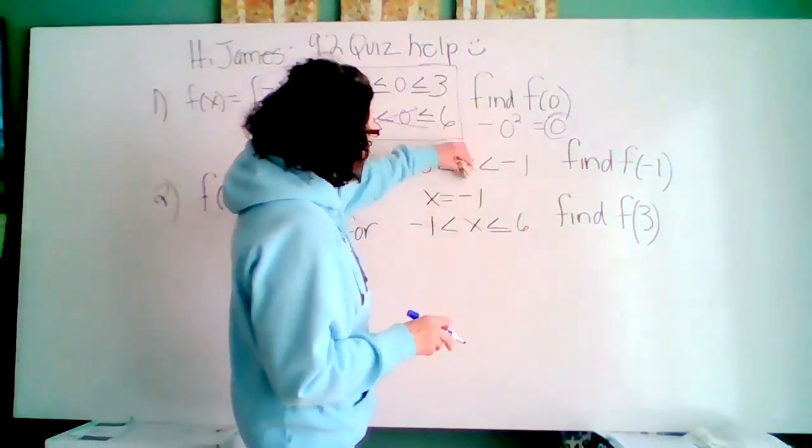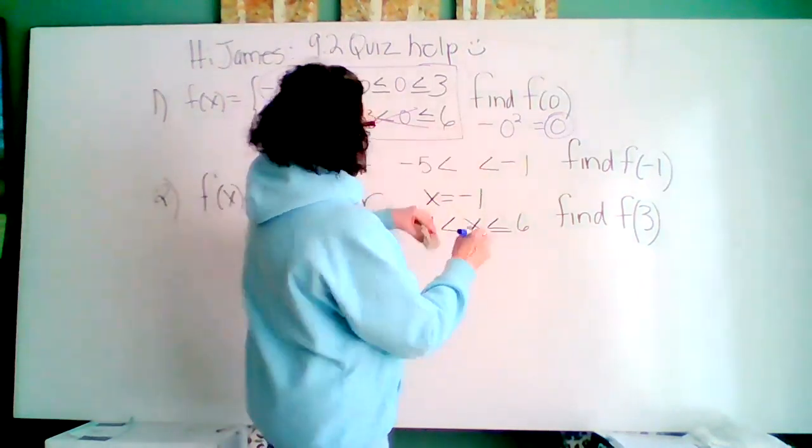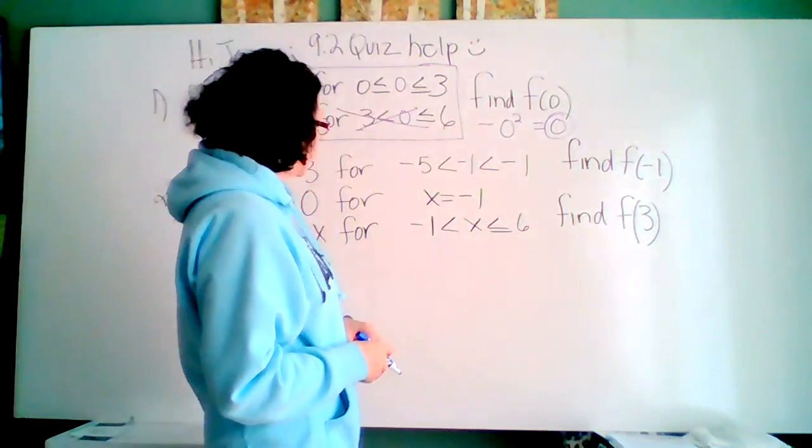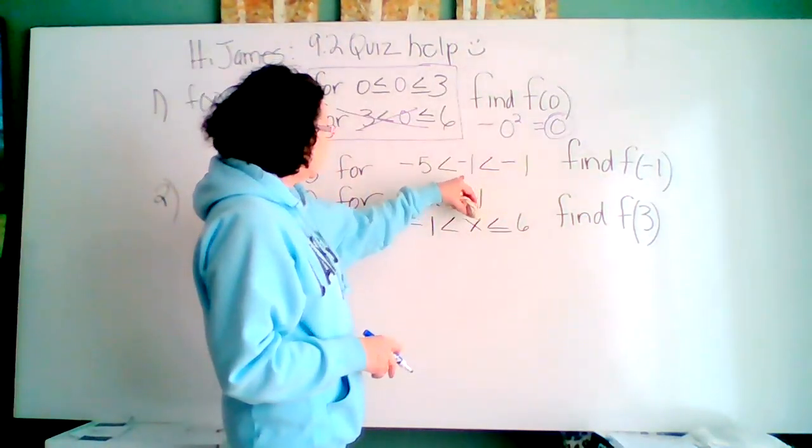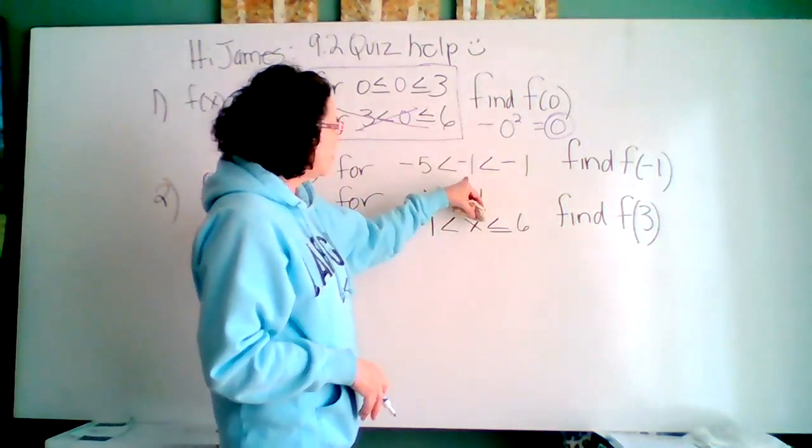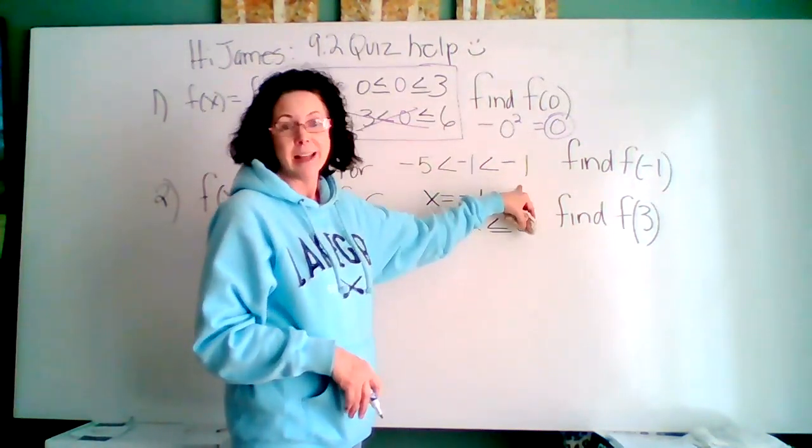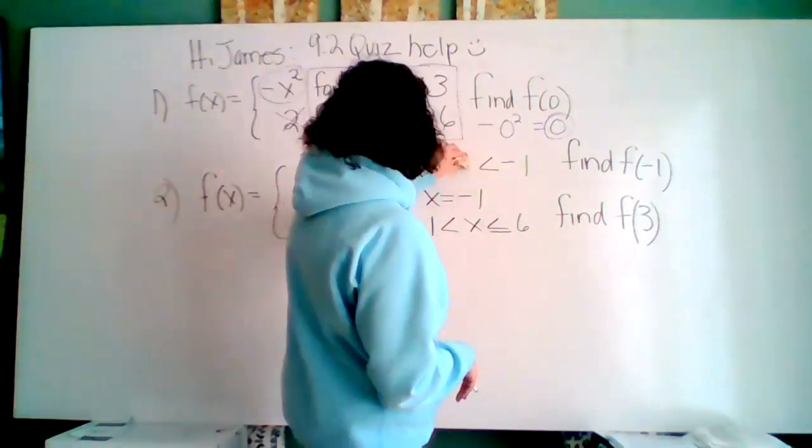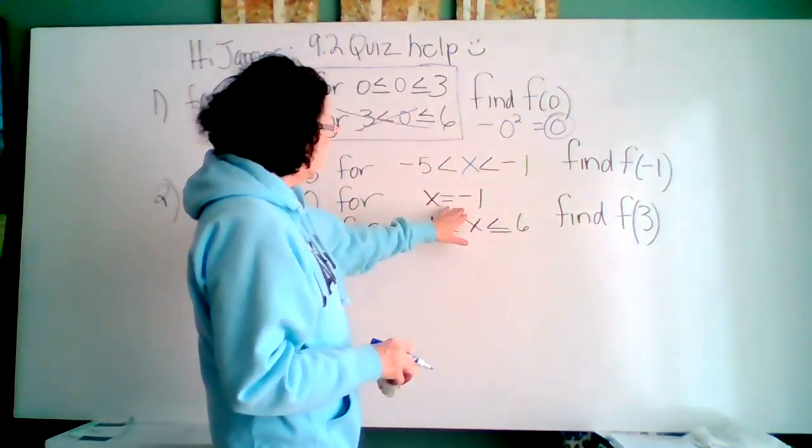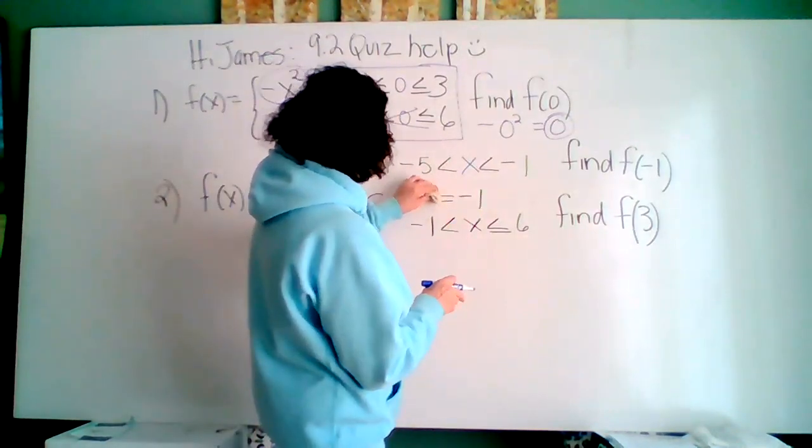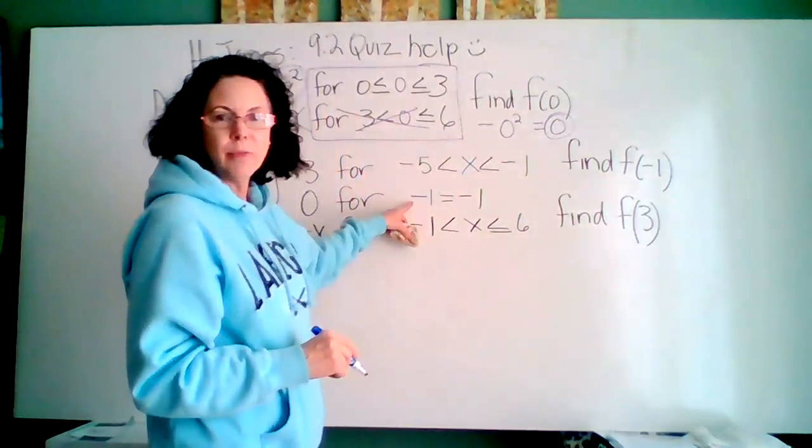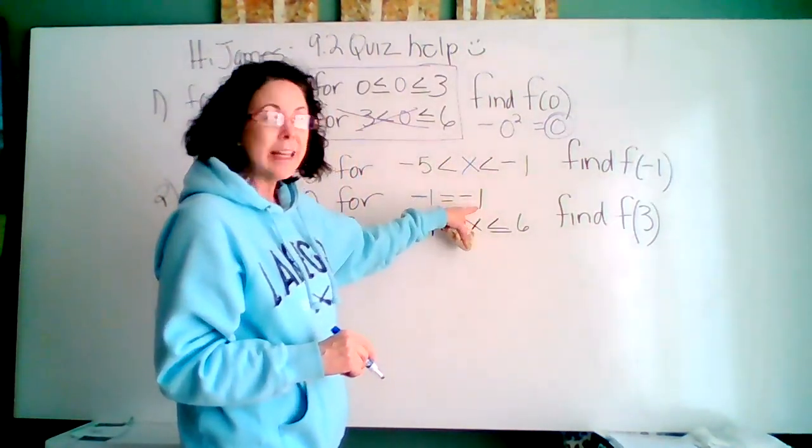I'm going to put a negative one right here for this x. Is it true that negative one is greater than negative five? Yes, it is. Is negative one less than negative one? No, it's not. It's equal to it. Not using this interval. Let's go to the next one. When I put in a negative one for x, is it true that negative one equals negative one? Yes, it does.